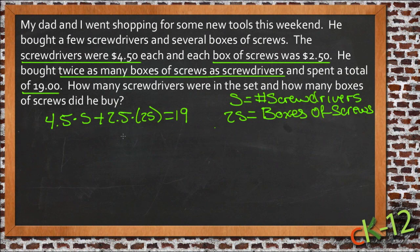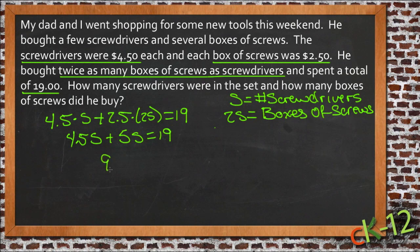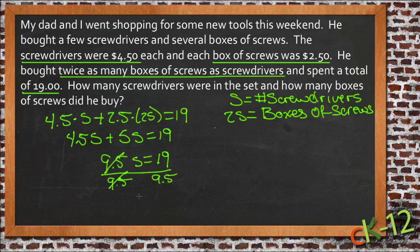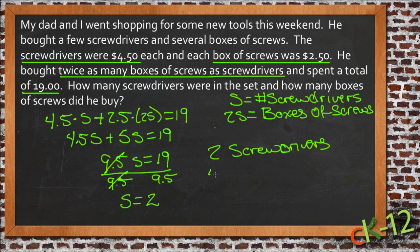We should be able to use this to solve for s. If we distribute 2.5 to 2s, we get 4.5s plus 5s equals 19, which gives us 9.5s equals 19. Dividing both sides by 9.5, the 9.5 cancels and we get s equals 2. So that tells us he bought two screwdrivers and four boxes of screws.